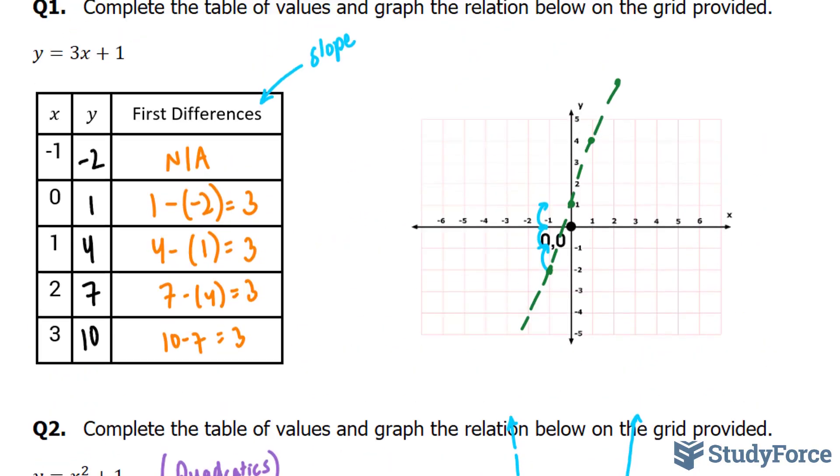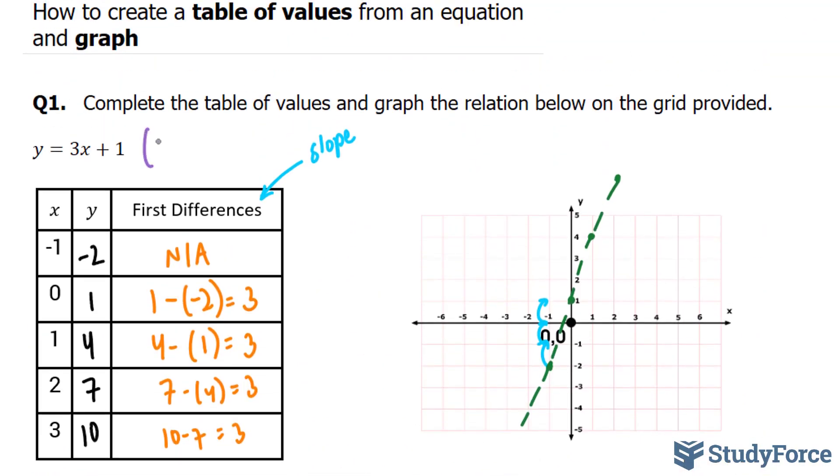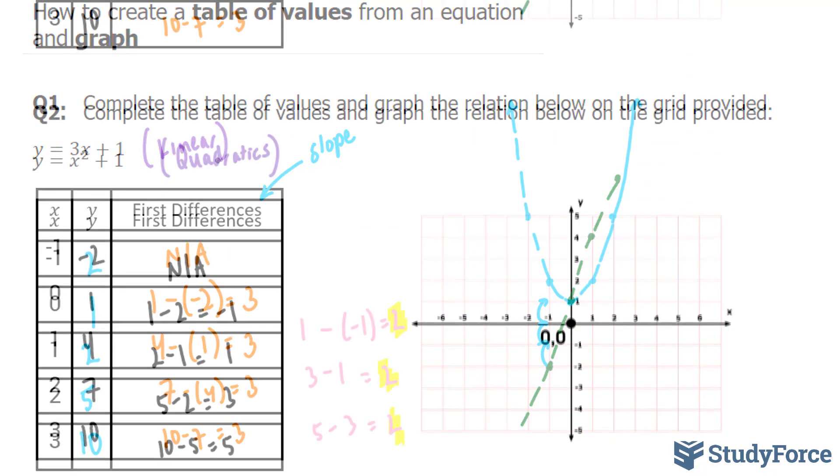And in our previous example, these are called linear equations. And in linear equations, the first differences are always consistent. So there you have it.